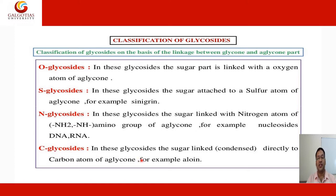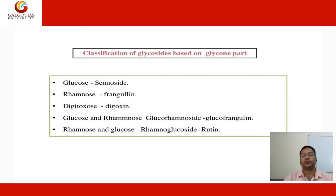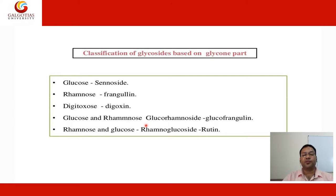C-glycosides — the sugar is linked or condensed directly to a carbon atom of the aglycon; for example, aloin. Classification of glycosides based on the glycon part: glucose-containing — sennosides; rhamnose — frangulin; digitoxose — digitoxin; glucose and rhamnose — glucofrangulin; rhamnose and glucose — rhamno-glucosides such as aloins.